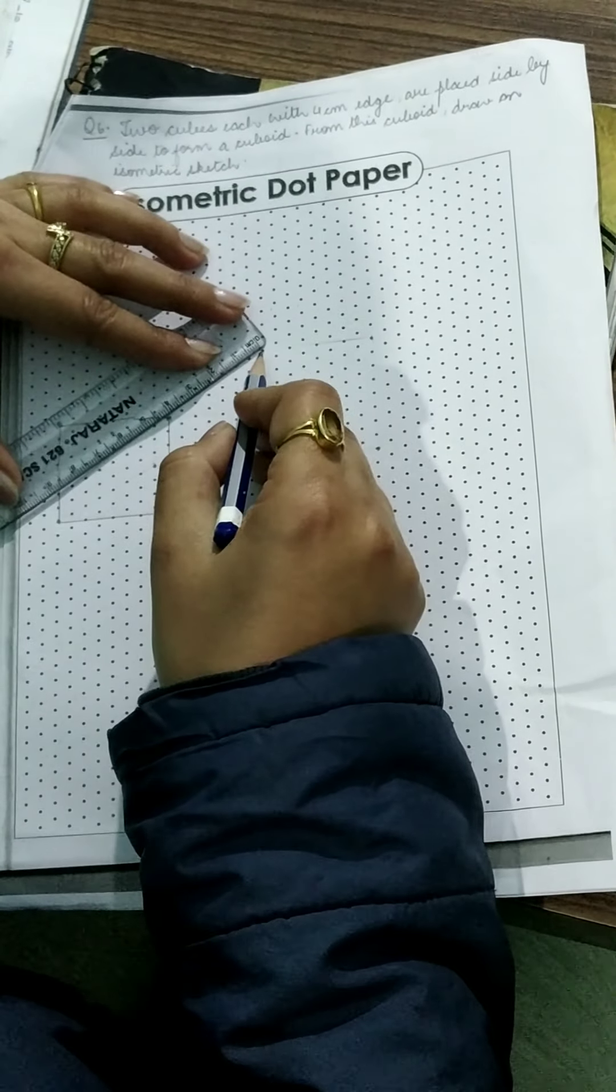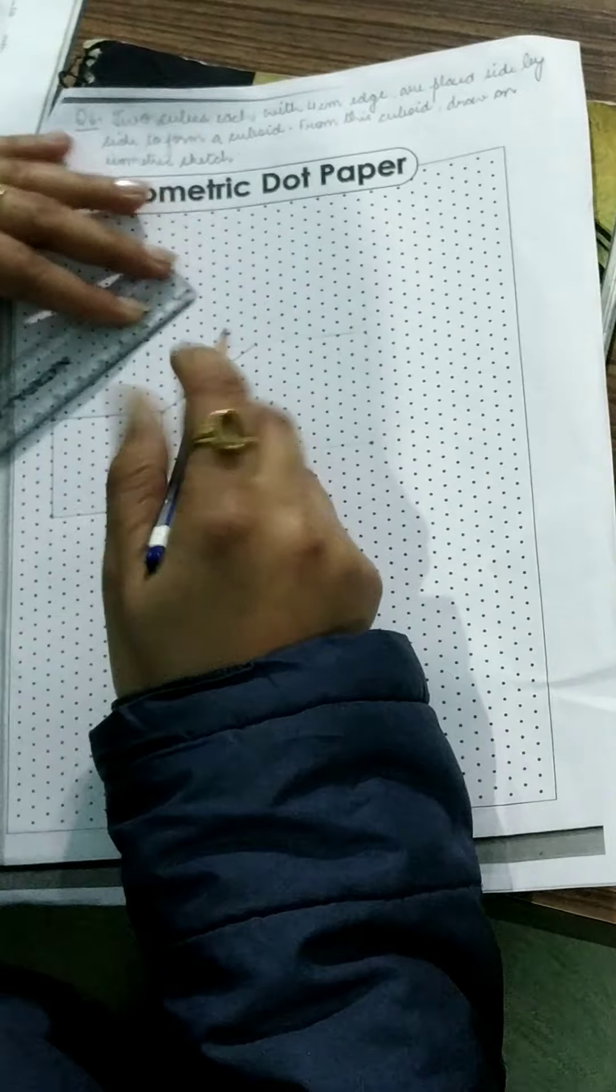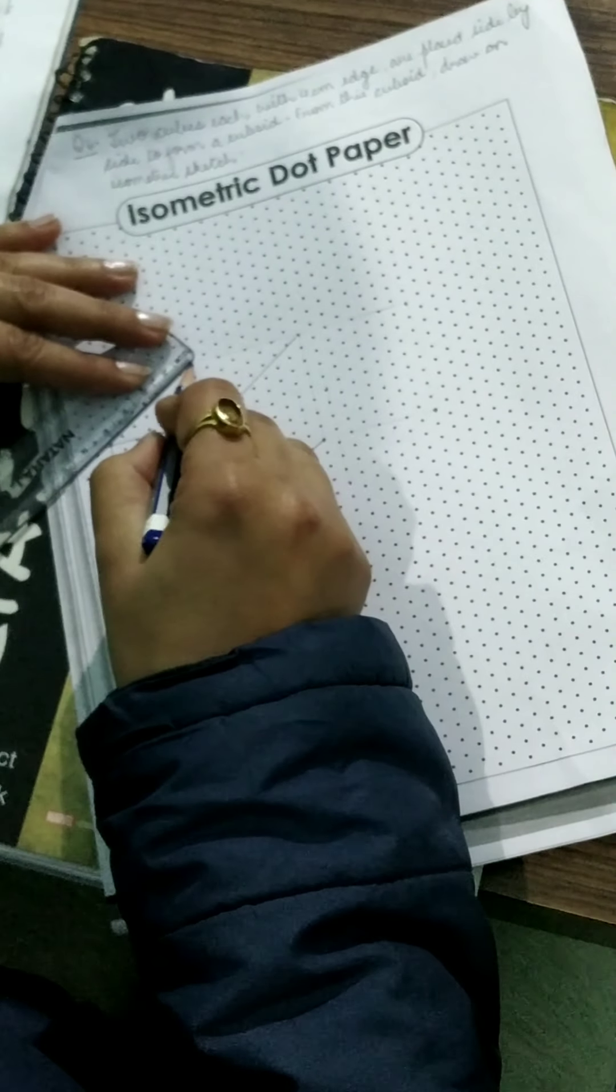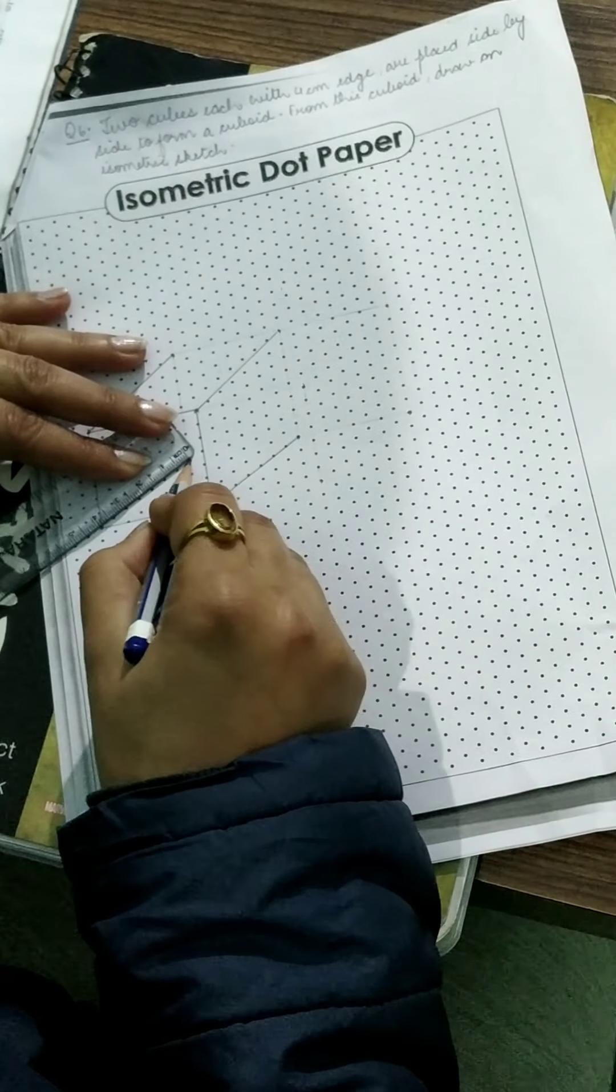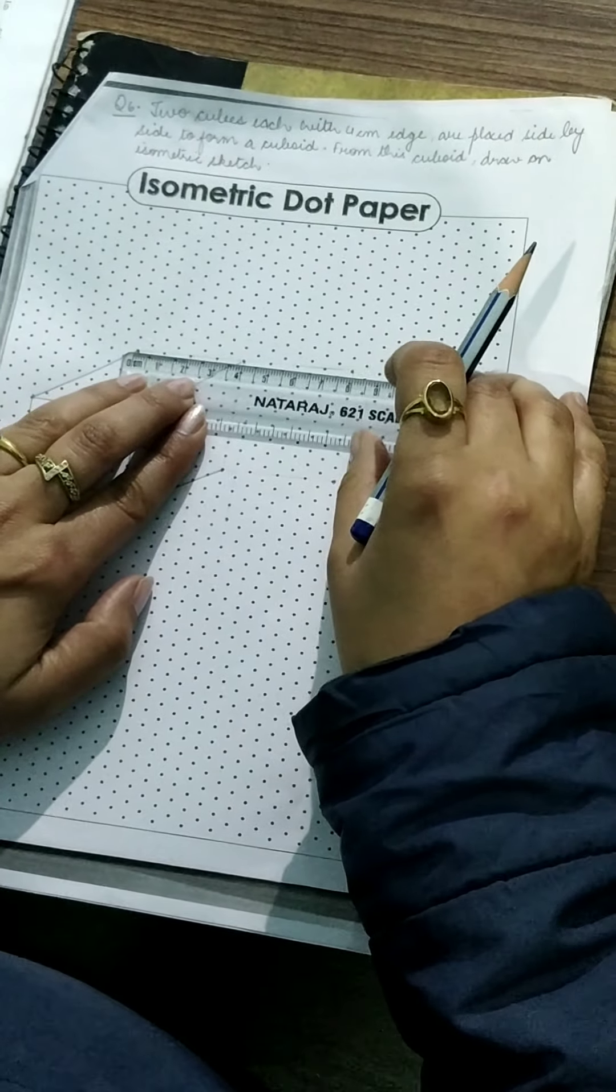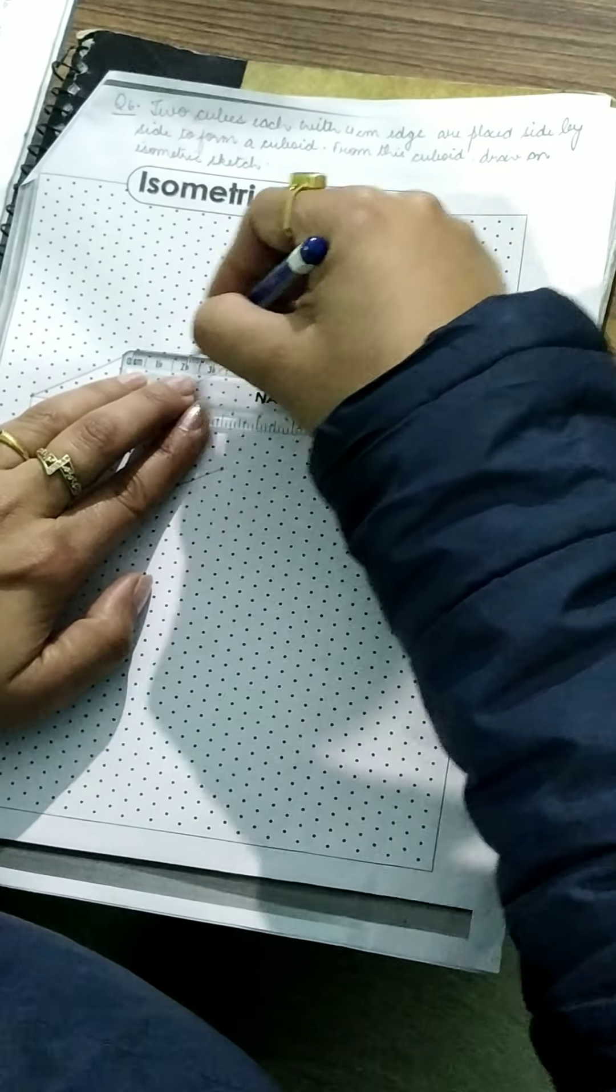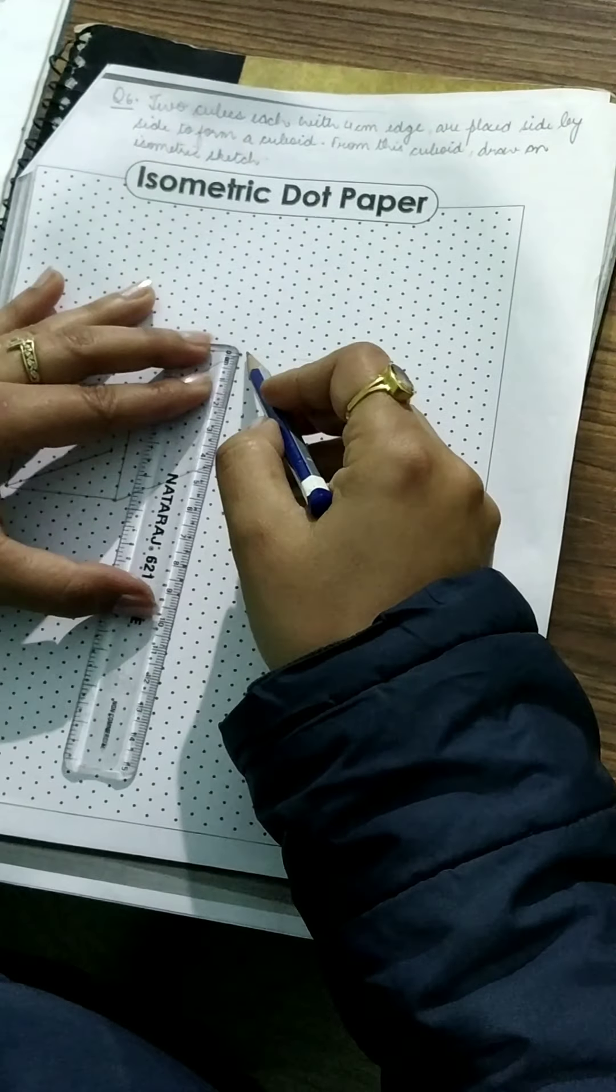Here also you have to draw 4 cm line. Here also 4 cm. All the lines should be 4 cm each because it is the cube. Now join all these lines and you can form a cube easily.